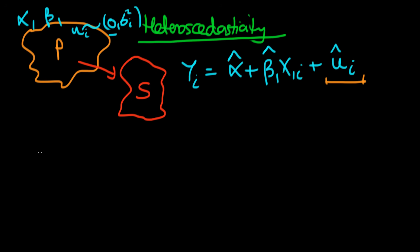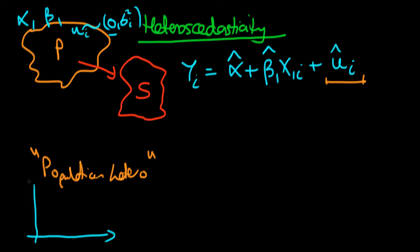Because of this distinction between the errors we actually observe and the true errors, there are two different ways in which we can get heteroscedasticity occurring in our residuals. The first is if we actually have some degree of true heteroscedasticity — another word for this is population heteroscedasticity. The idea is that our true population error is in fact heteroscedastic: there is some systematic variance in our population error squared, U squared, along one of the important independent variables in our regression.